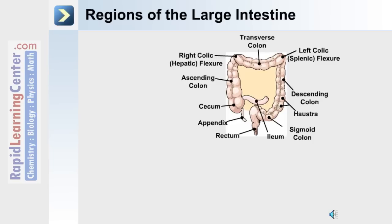The cecum gives way to the ascending colon, which rises until the right colic or hepatic flexure. Next, the large intestine turns and becomes the transverse colon, which travels across to the left colic or splenic flexure, where it turns and descends as the descending colon. Also labeled in the diagram are the haustra. The sigmoid colon then turns to join the rectum at the end of the digestive system.